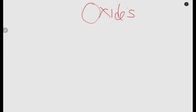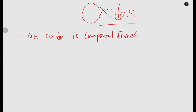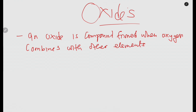In this video, let us look at one important part of chemistry that usually comes in an exam. You need to know this part before you go into an exam. So we are going to look at oxides. An oxide is a compound formed when oxygen combines with other elements.